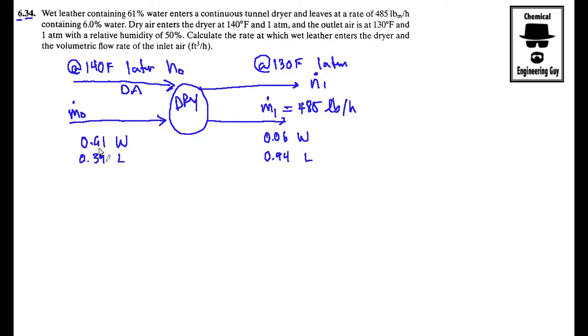We're going to differentiate the leather because it's in mass and the air in moles. Calculate the rate at which wet leather enters the dryer (so this is m0) and the volumetric flow rate of the inlet air. So essentially calculate n0 and turn it to volumetric flow.